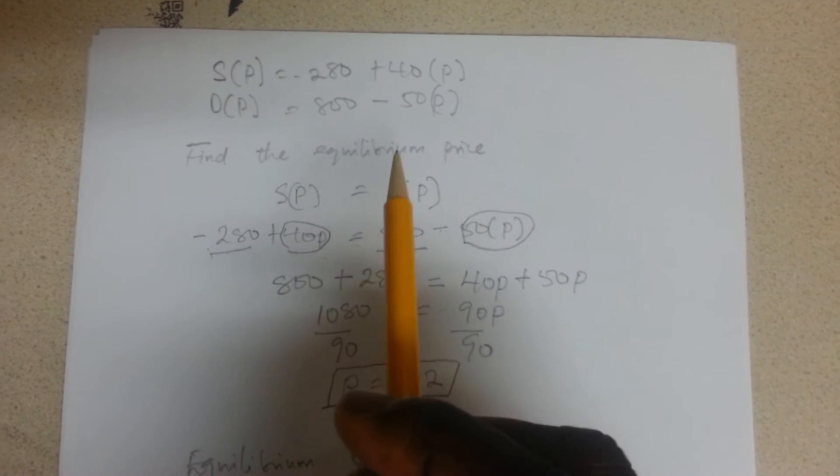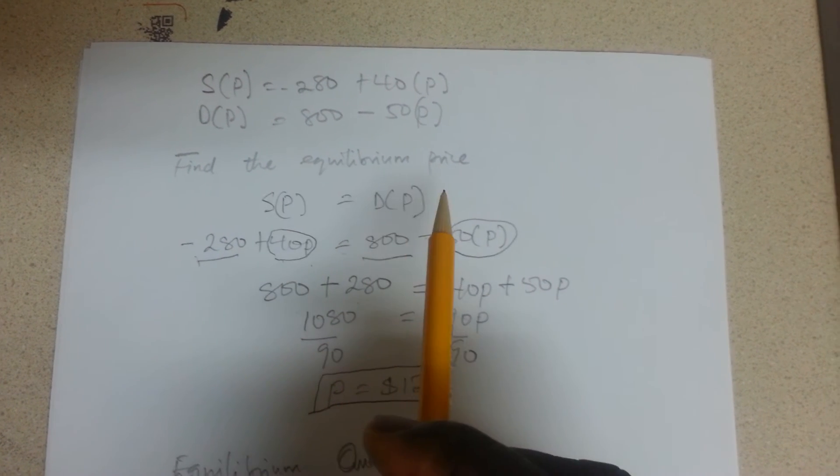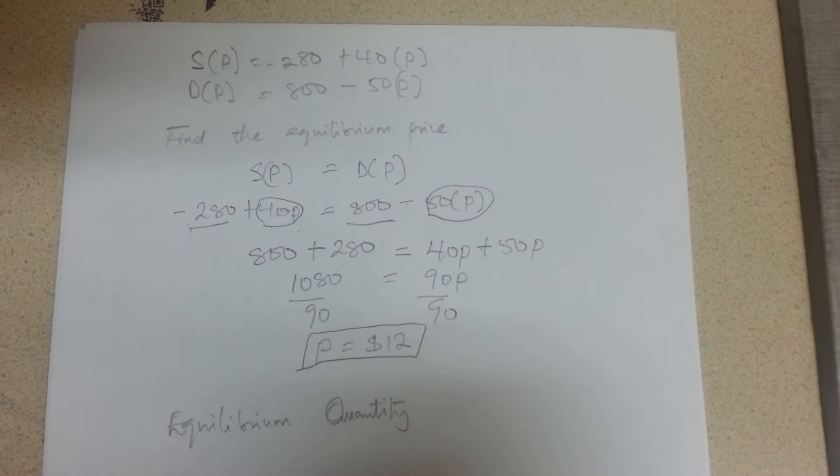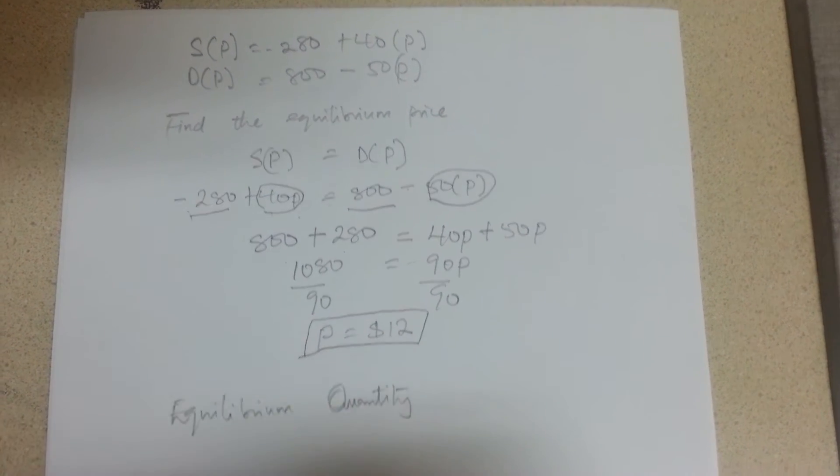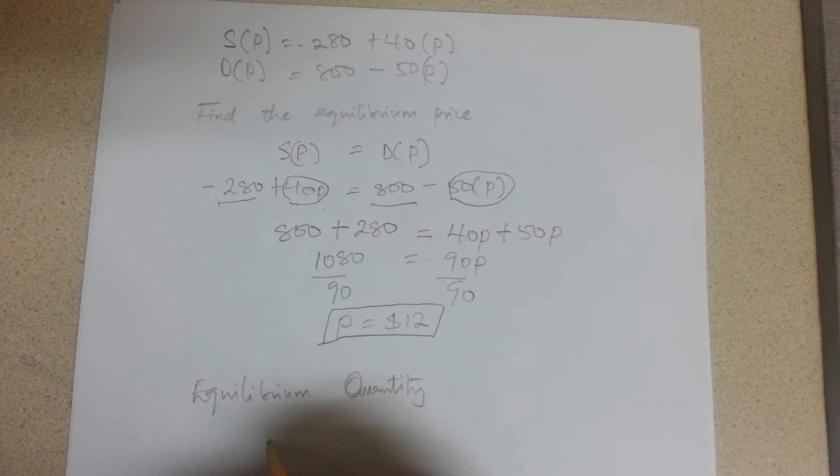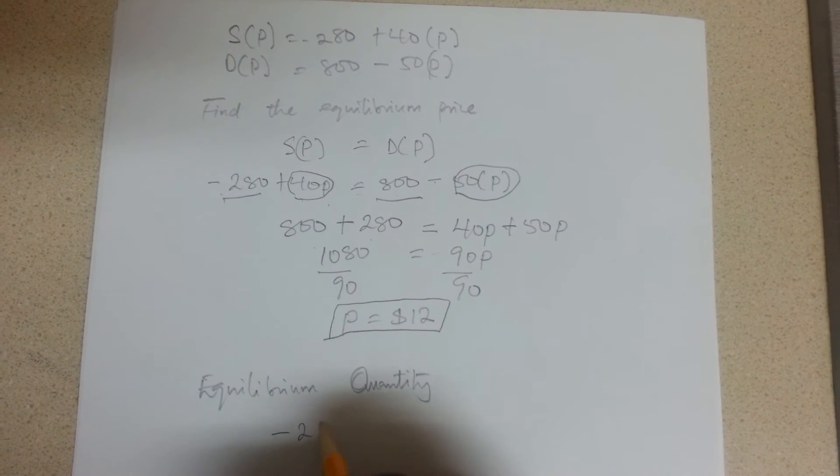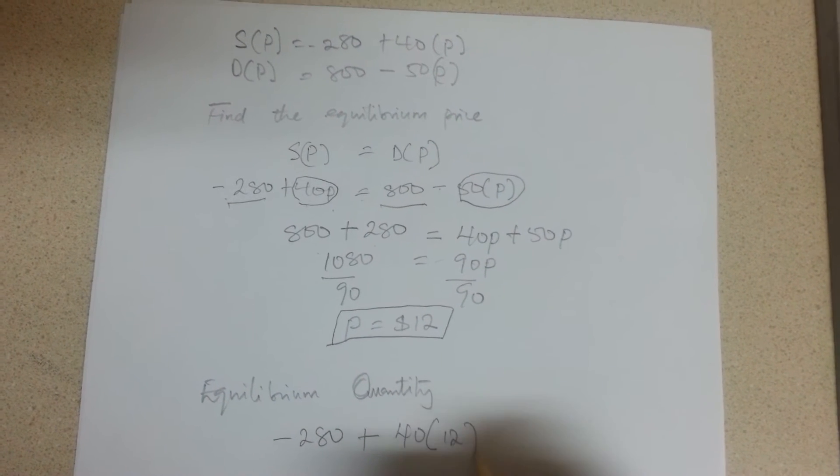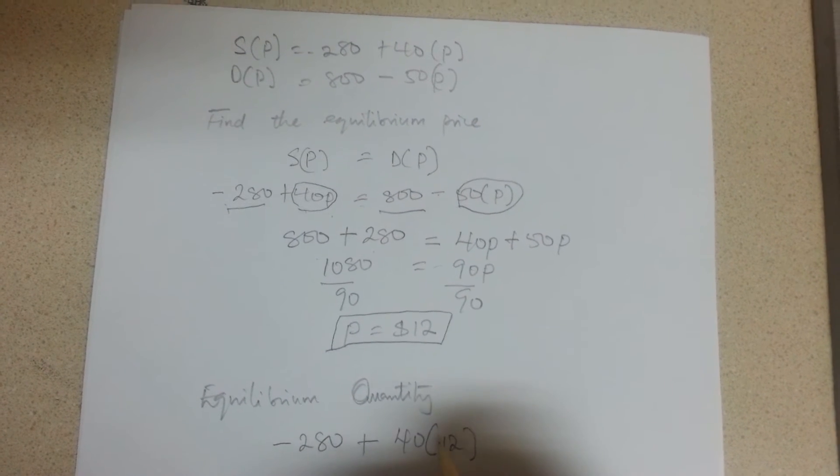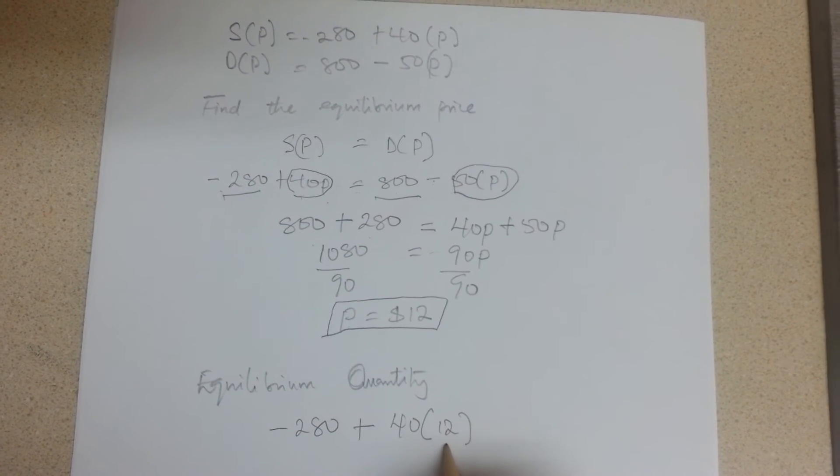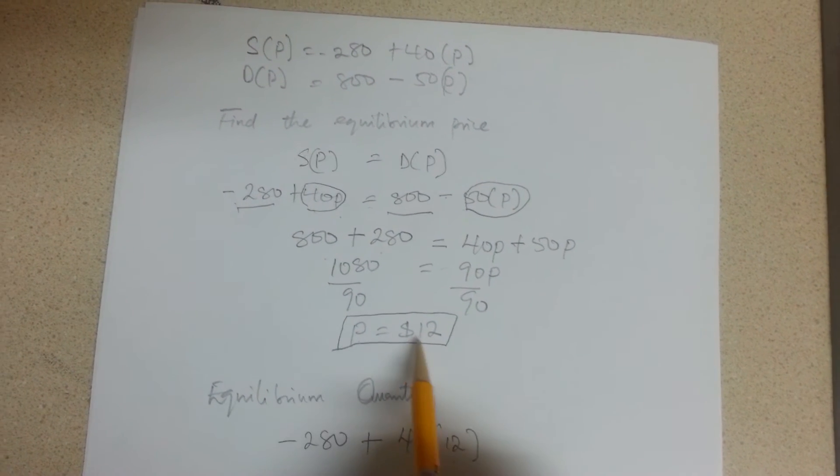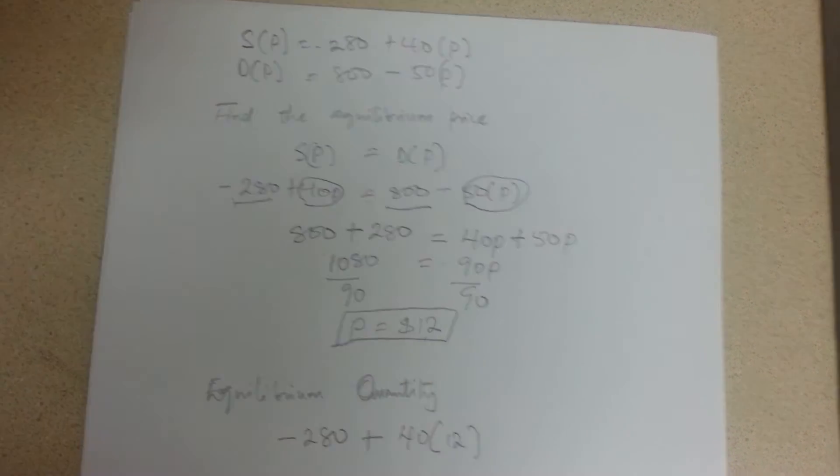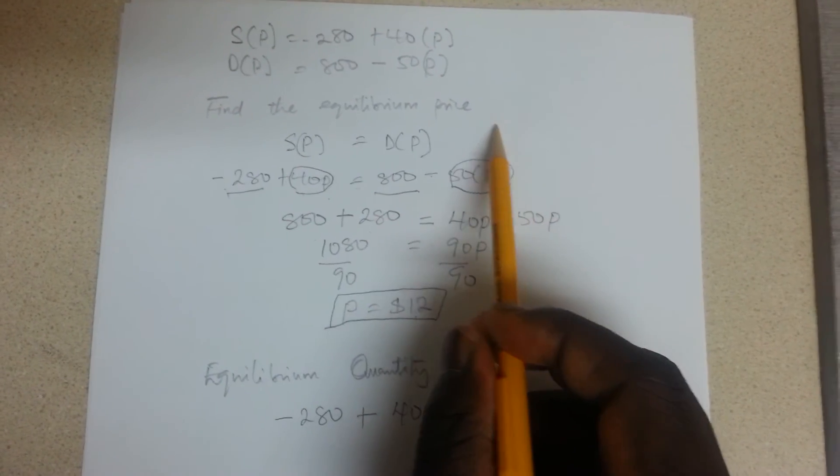To calculate the equilibrium quantity, you have to take one of those two equations that were given at the beginning. You can take the one at the top or the one below. Let's take the supply one, which is negative 280 plus 40 times 12. Why did I put 12? Anywhere you see P you have to put 12 in it.